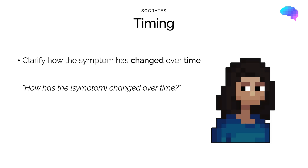Next up is Timing. In this part of SOCRATES, we want to establish how the symptom has changed over time, and this is related to Onset earlier in the mnemonic. Onset and Timing are both really important parts of SOCRATES because we want to establish a clear timeline of the patient's symptom from when it started to when they presented. The time course of a symptom can give us important clues as to the underlying diagnosis and can help us tailor our investigation and management plan.